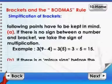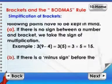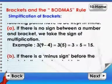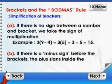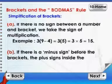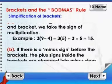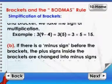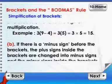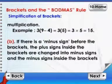Example: 3 open bracket 9 minus 4 close bracket, is equal to 3 open bracket 5 close bracket, which is equal to 3 into 5, or 15.